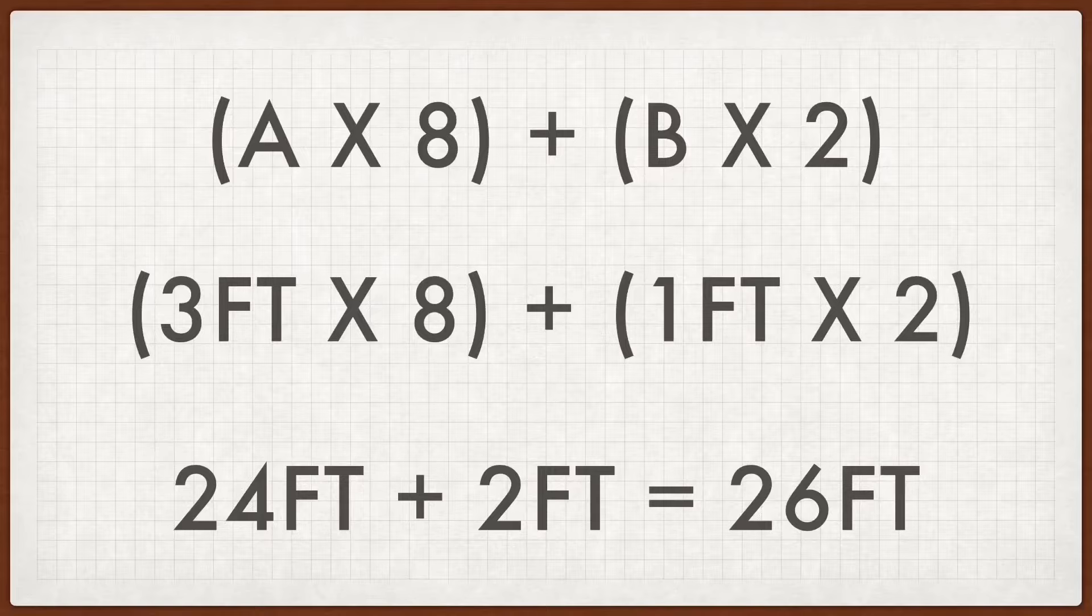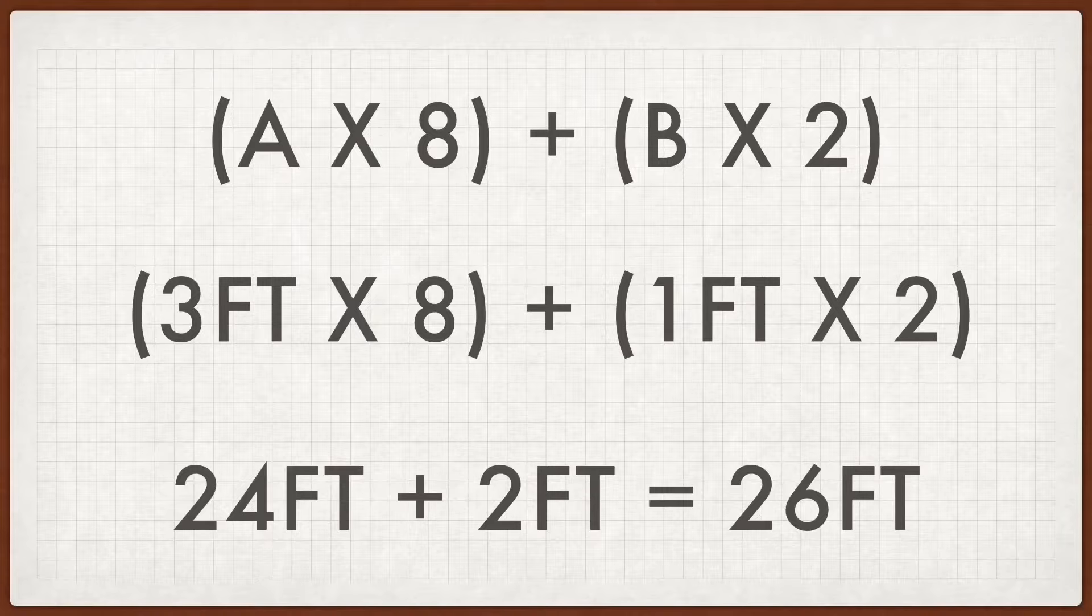Now you get those two sums, which is 24 and 2, and you just add those together to get 26. That means that in your project you're going to measure every single rope 26 feet long, and that will account for the knotted section and the fringe in your project.